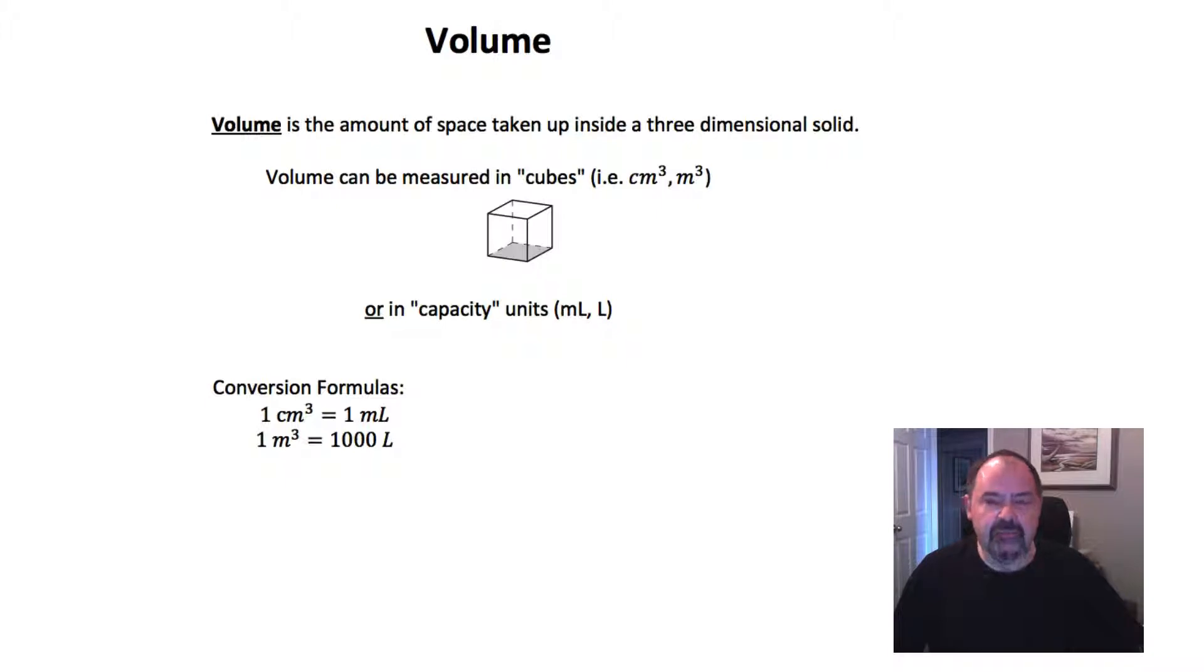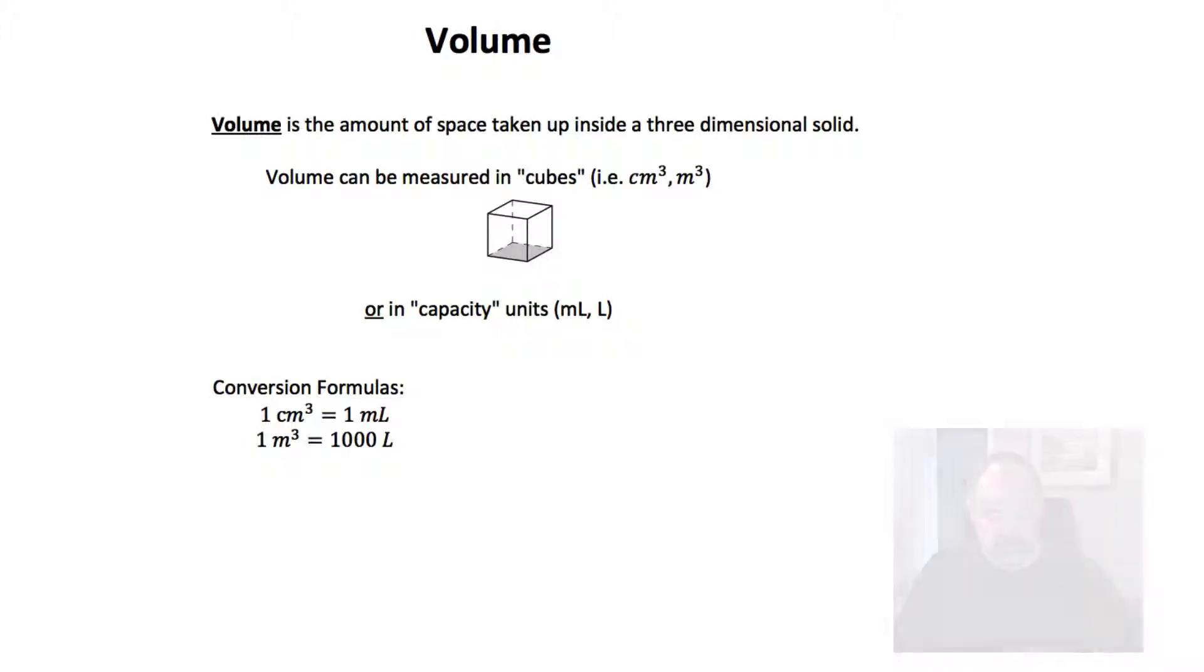We typically measure volume in cubes. For example, we could measure the amount of space inside a three-dimensional object in the number of one centimeter by one centimeter by one centimeter cubes, what we call a centimeter cube. This is one centimeter cubed. Or we could use meters cubed or some other measure. So measuring the amount of cubes inside is one way to measure volume.